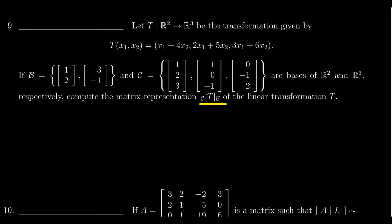We're asked to compute the matrix representation [T]_C^B. So we're going to represent the domain using B coordinates, and the co-domain using C coordinates. This is not the standard matrix representation; it's the matrix representation with respect to C and B coordinates.